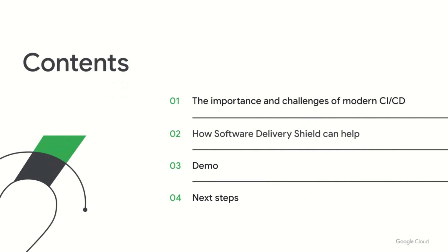We're going to start by talking about the importance of CI/CD in a modern context, as well as challenges that you may face as you modernize your software supply chain. We'll then talk about how Software Delivery Shield, which is Google Cloud's secure software supply chain solution, can help in some of these areas. We'll cap things off with a demo to show you how all of this comes together and talk about potential next steps.